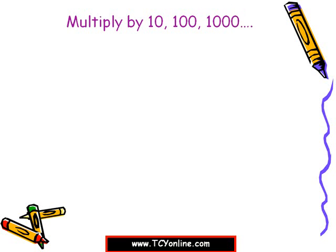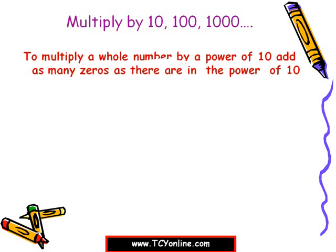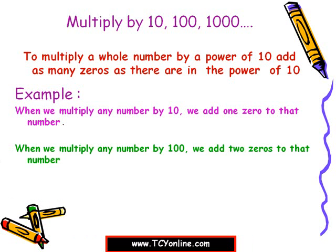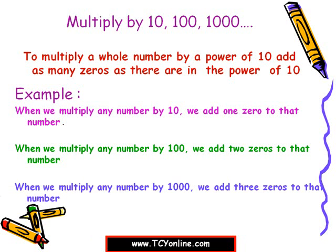Let's look at the rule which we use while multiplying any number by 10, 100, or 1000. When we are multiplying a whole number by a power of 10, add as many zeros as there are in the power of 10. For example, when we multiply any number by 10, we add one zero; by 100, we add two zeros; and by 1000, we add three zeros.